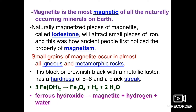Naturally magnetized pieces of magnetite are known as lodestones. These stones have magnetic properties and will attract small pieces of iron. In ancient times, people first noticed the properties of magnetism through lodestones, which could attract small pieces of iron. This is how the property of magnetism was first identified.